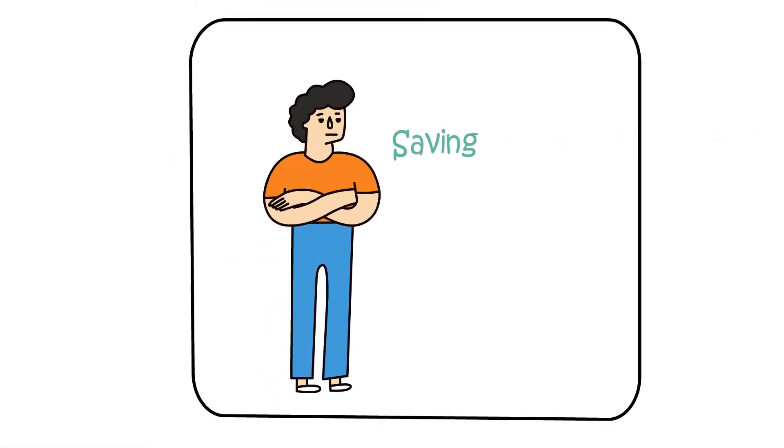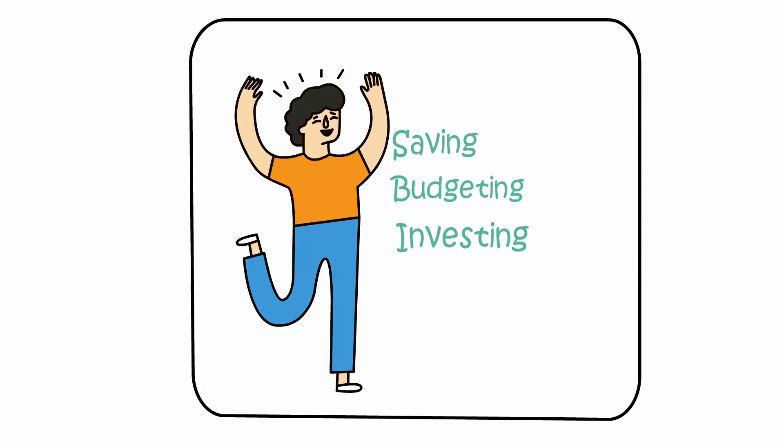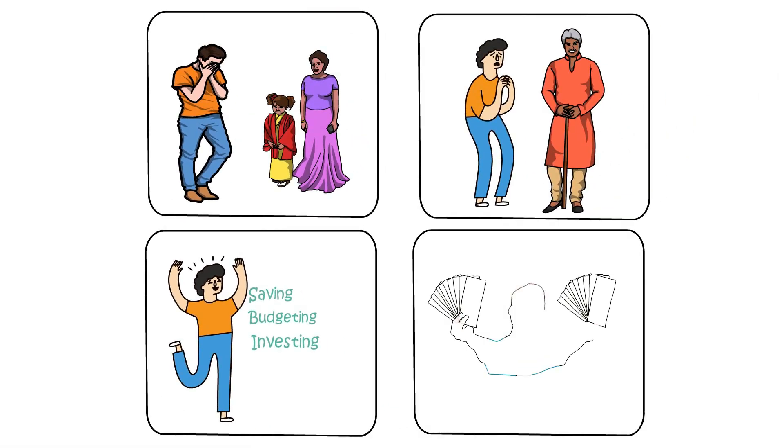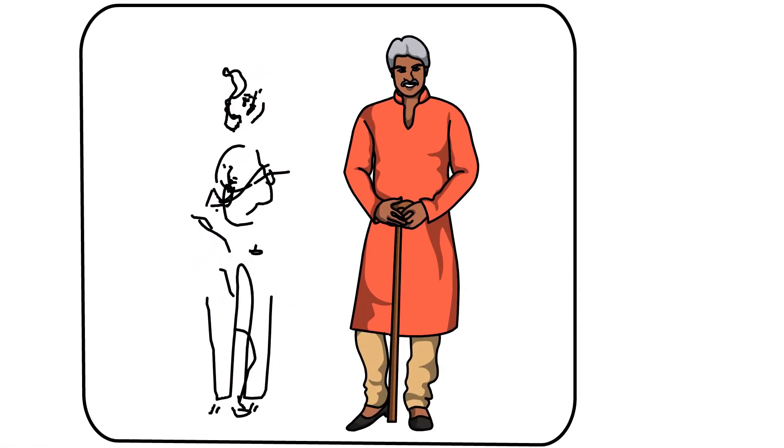Arkad learned the proper ways of saving, budgeting and investing. He improved bit by bit, with the wisdom passed down by his mentor. Arkad kept learning until he mastered the laws of wealth. Algomish, as his mentor, became very fond of him for the person he had become.